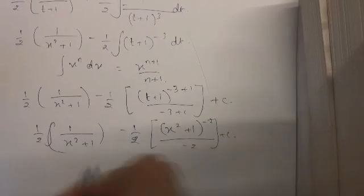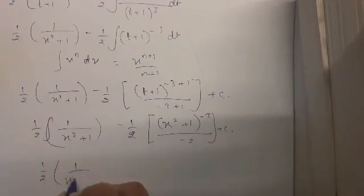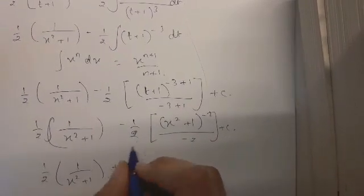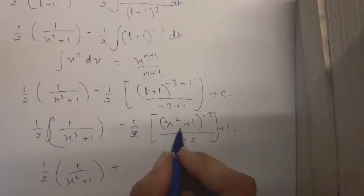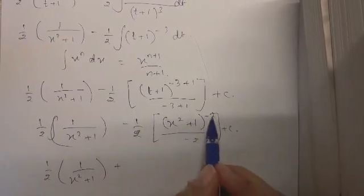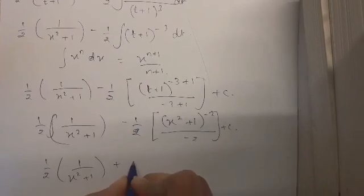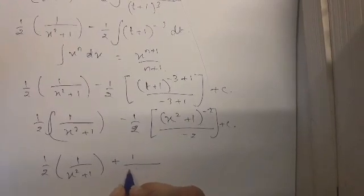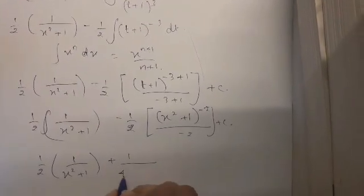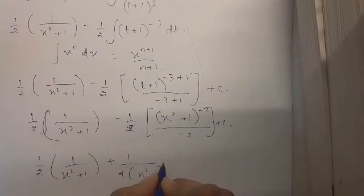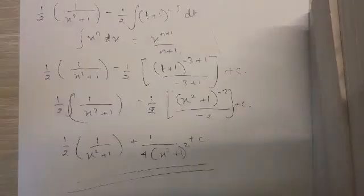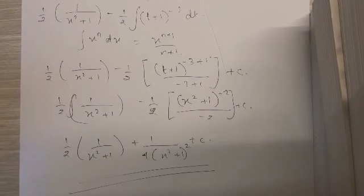Simplifying — the minus signs give us a positive, and minus two times two becomes four. Taking the power to the denominator as positive, the final answer is one-half times one upon x squared plus one, plus one upon four times x squared plus one squared, plus C. You can simplify further, but that's the final answer. Thank you so much for watching, I'll see you in the next video, bye!